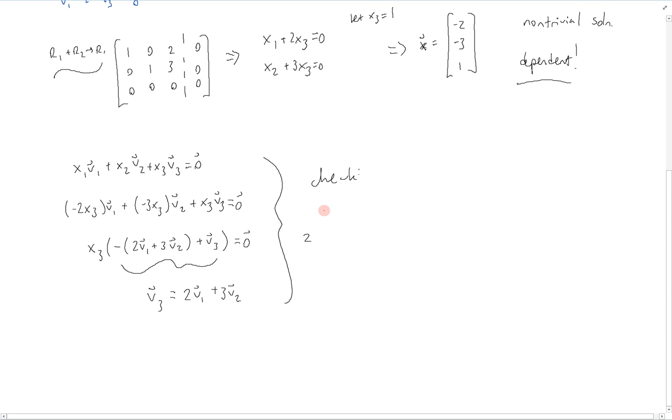Just looking at our vectors from before, we get this as 2 times 1, 3, 2, that was v1, plus 3 times negative 1, 2, negative 1, which is v2.